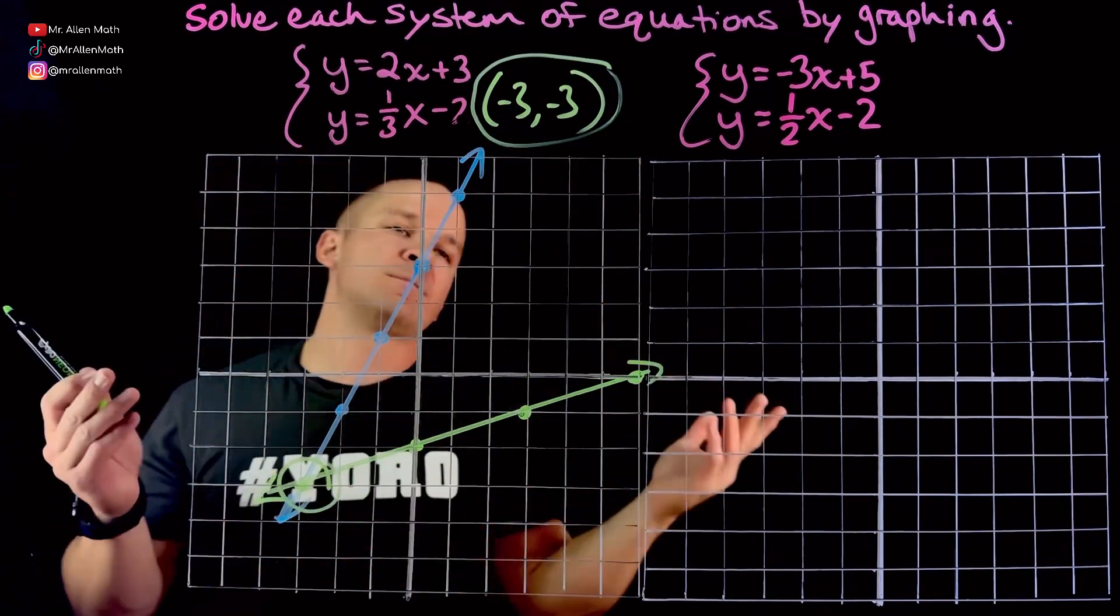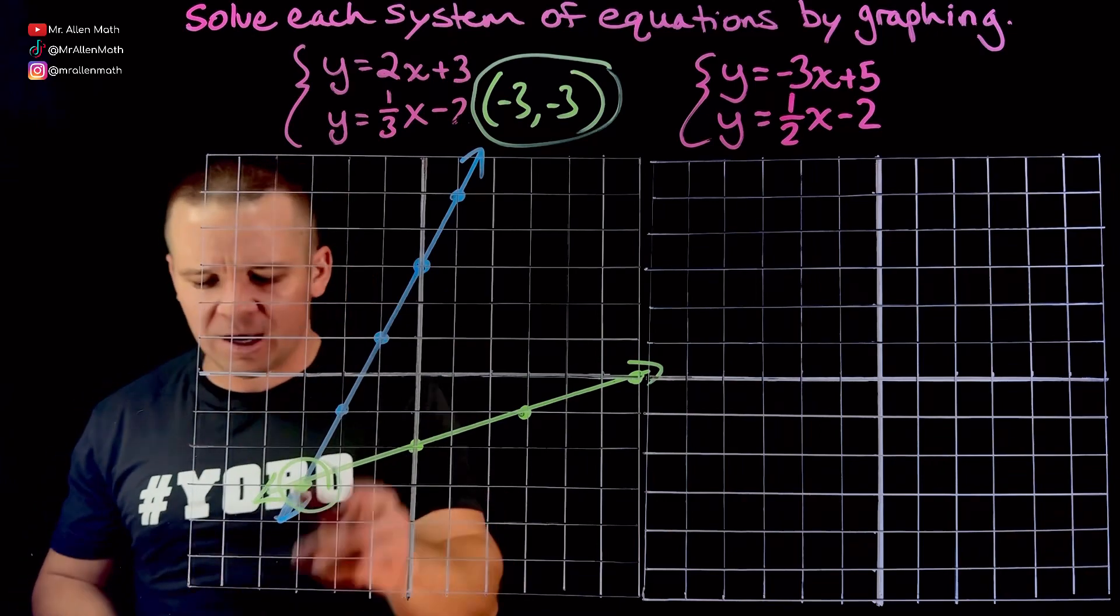There's my solution. We also have it on the graph. Bibbidi-boppity. All right, nice. First one done.